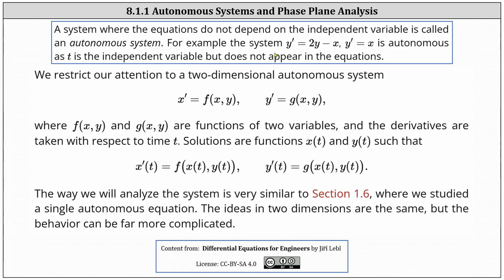A system where equations do not depend on the independent variable is called an autonomous system. For example, the system y' = 2y - x and y' = x is autonomous, as t is the independent variable but does not appear in the equations.